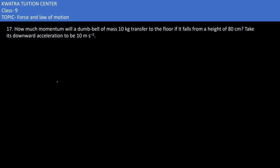Now in the 17th part it says, how much momentum will a dumbbell of mass 10 kg transfer to the floor if it falls from a height of 80 centimeter? Take its downward acceleration to be 10 meter per second square.